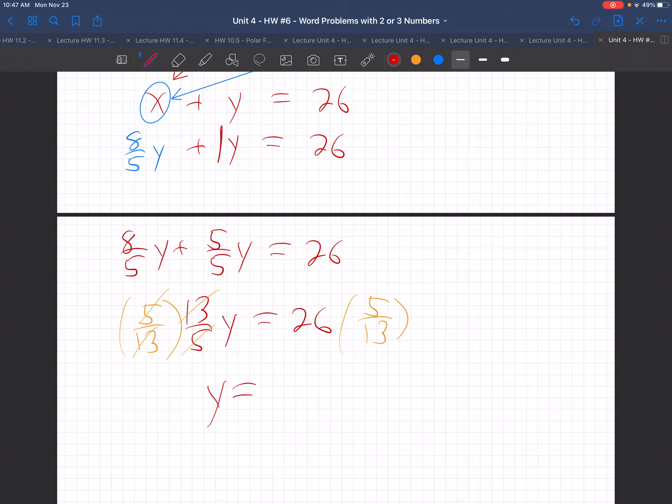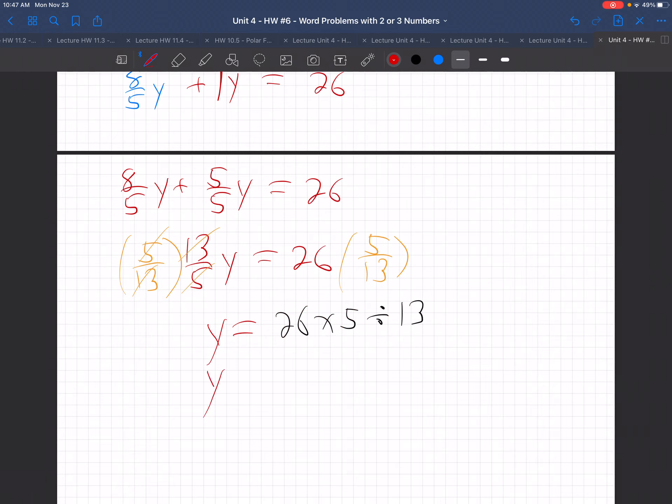5s cancel, 13s cancel. Y is - take your calculator and take 26 times 5. You multiply by the number on the top, divide by the number on the bottom, and you'll get 10. So y is 10.